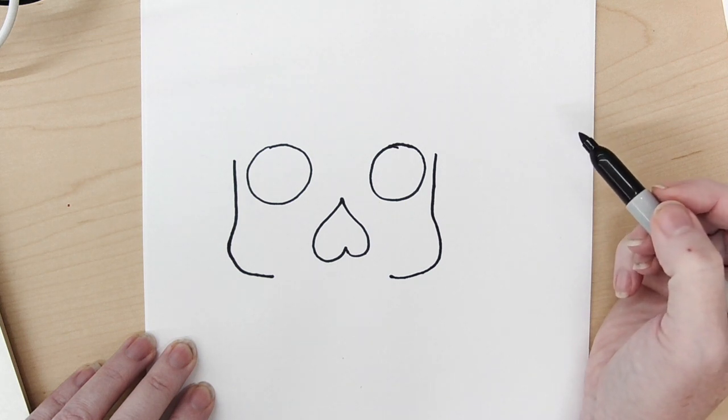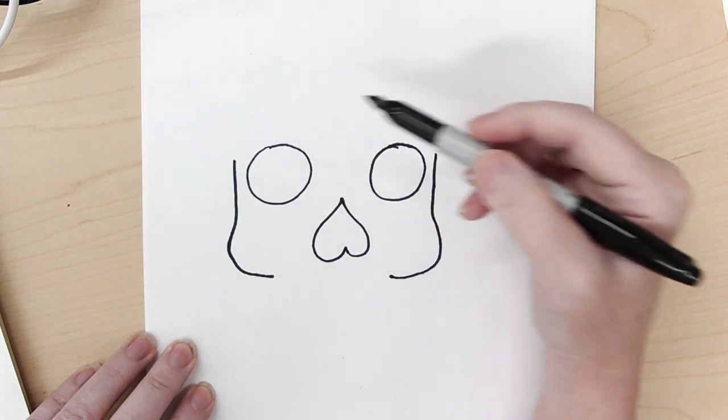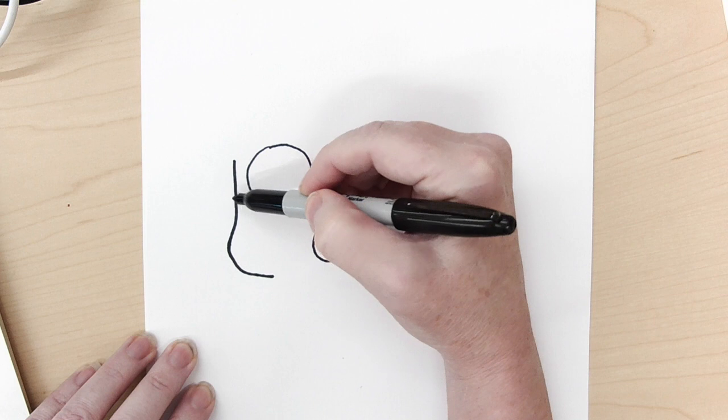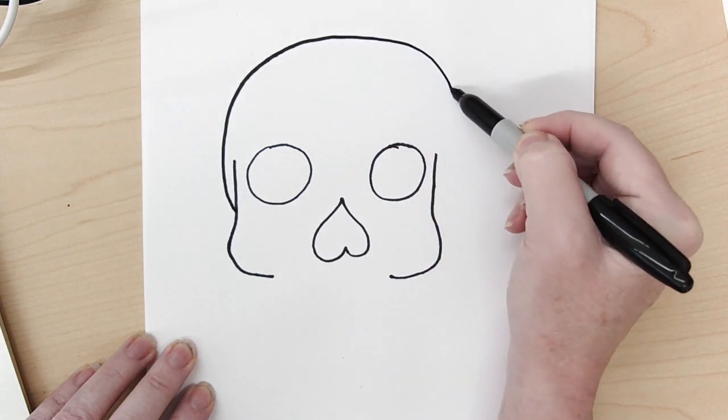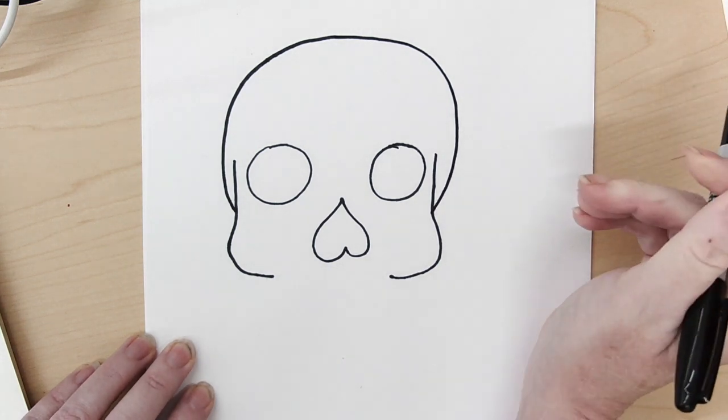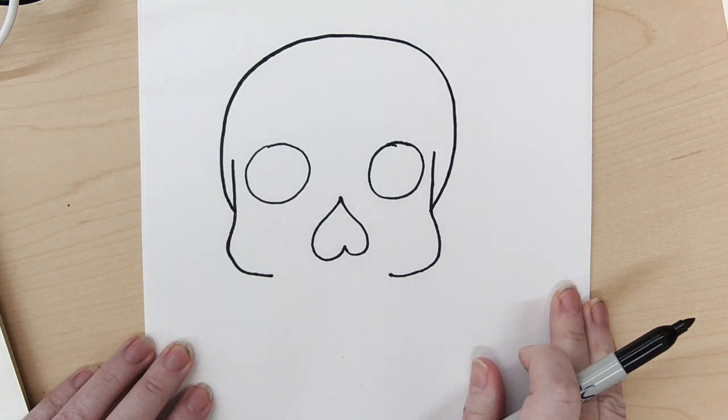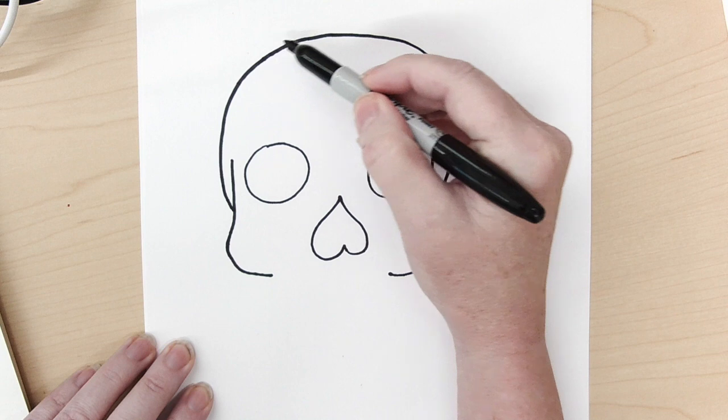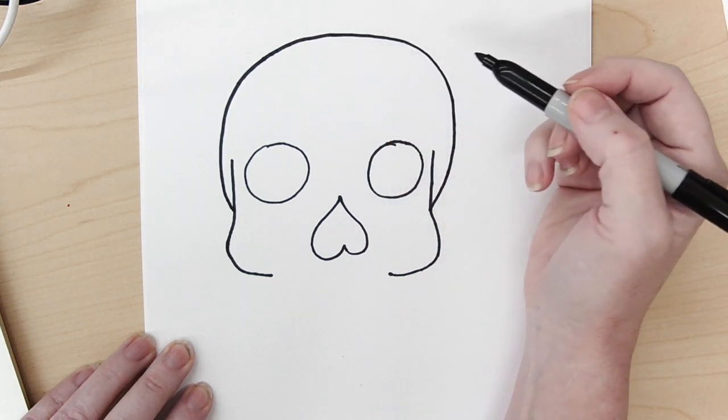And of course we're all about embracing the wabi-sabi this year, the imperfections. So we're going to come out around for the top of the skull and then we're going to come back. And again, the more you do this the better you'll get. And the taller this is, the more room you'll have to do some cool drawing.